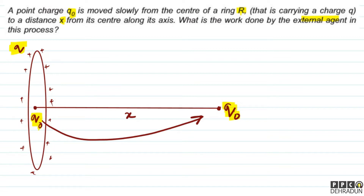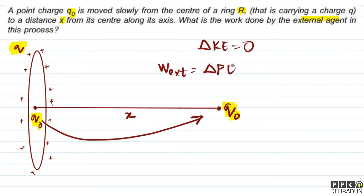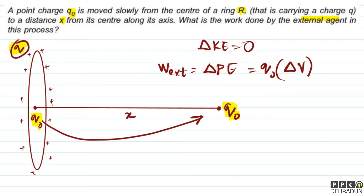Since the charge is moved slowly, there is no change in kinetic energy (ΔK = 0). So the work done by the external agent equals the change in potential energy. The potential at any point is created by charge q, and q₀ is just a visitor moving through those locations.